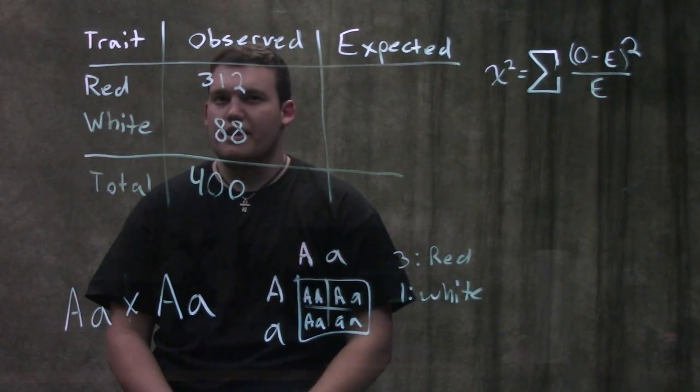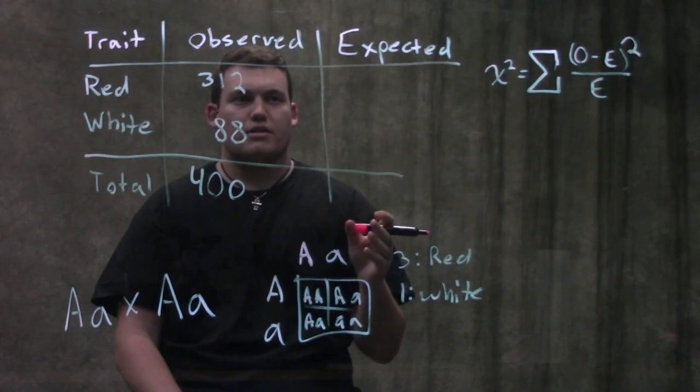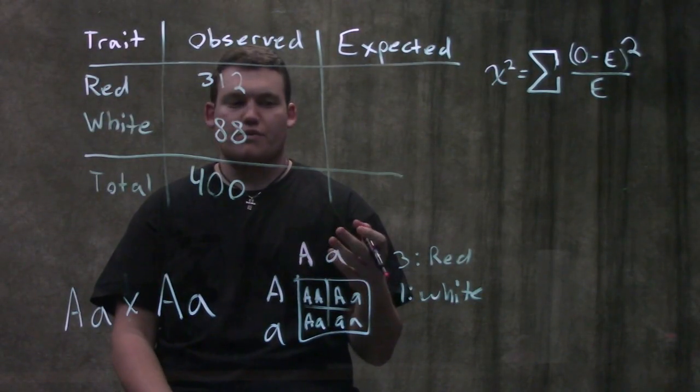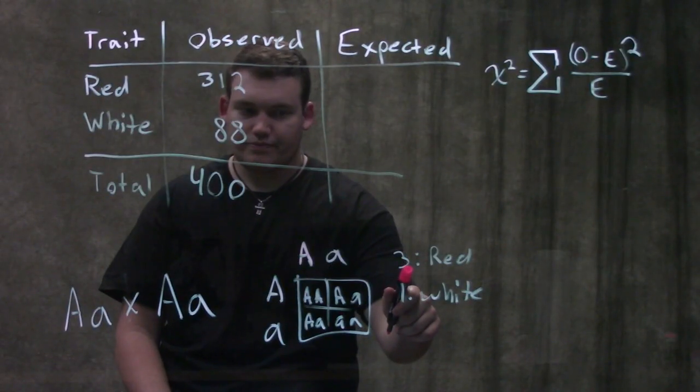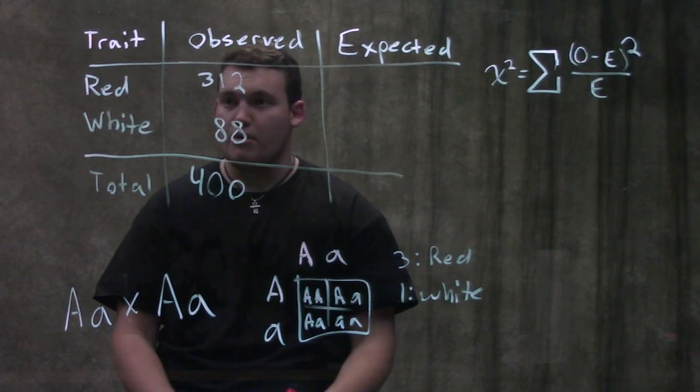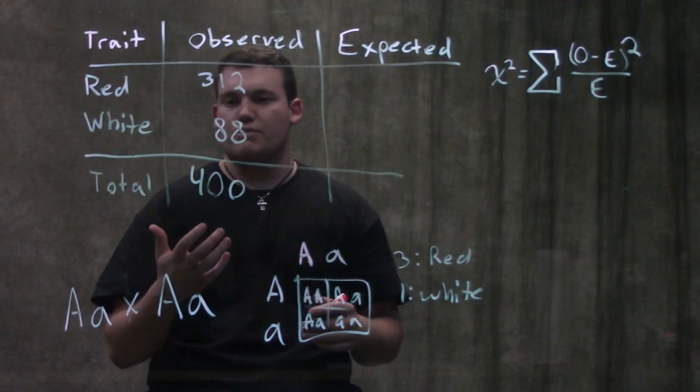But the question here is, here's our observed. They have to give you the observed but how do we find our expected is the real question here. So what we're gonna do is we're gonna say three-fourths of them are supposed to be red. If everything went according to plan, three-fourths of them should be red.